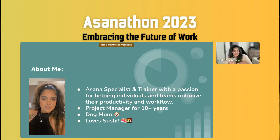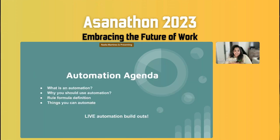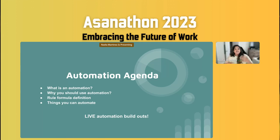Some fun facts: I am a dog mom — I have a nine-pound Yorkie Pug who is seven years old and people always think he's a baby. And I ordered sushi today for lunch because I love sushi! Now let's get started with today's agenda. I want to talk about what an automation is, why you should use automations, how rules work, and then we'll do live automation build-outs.